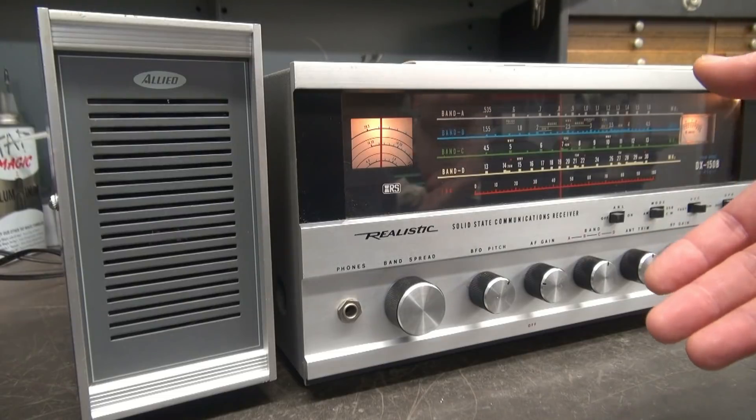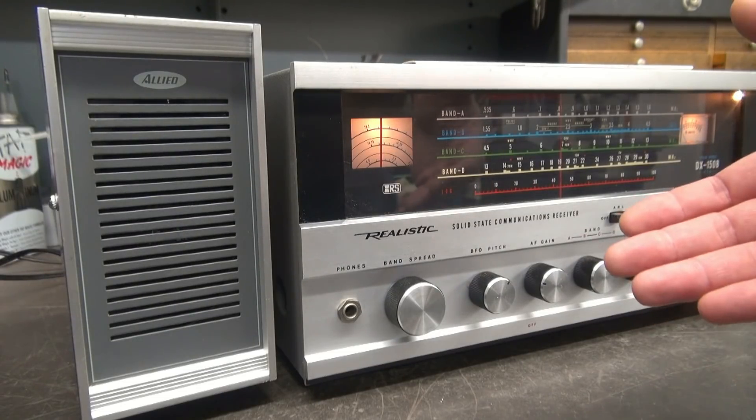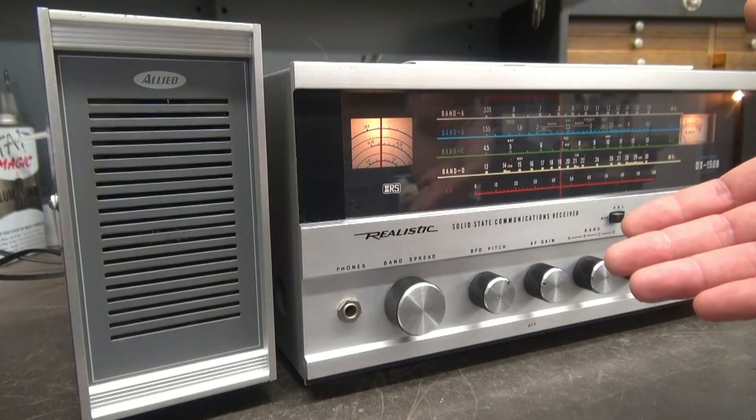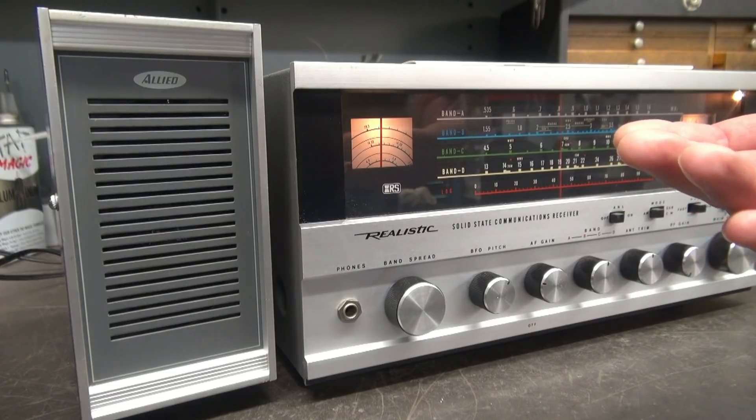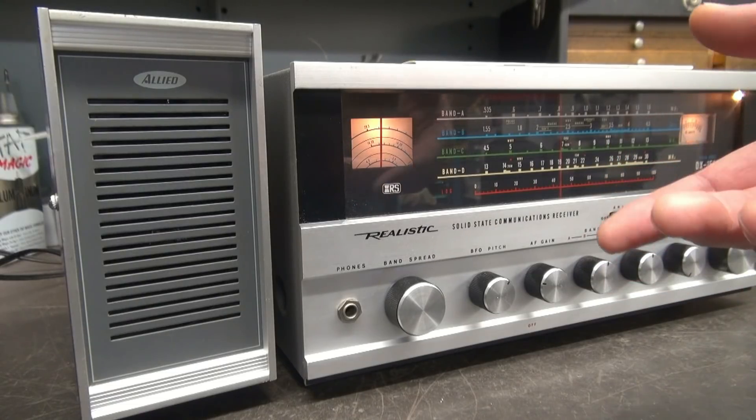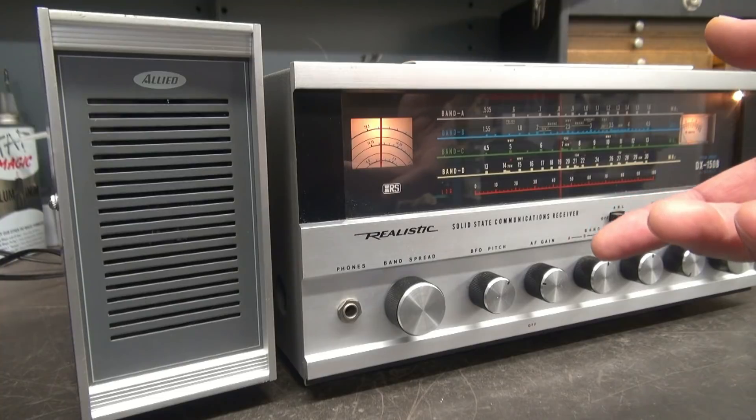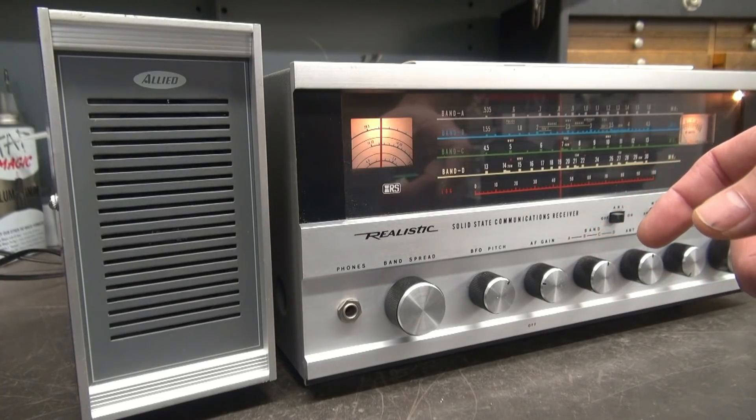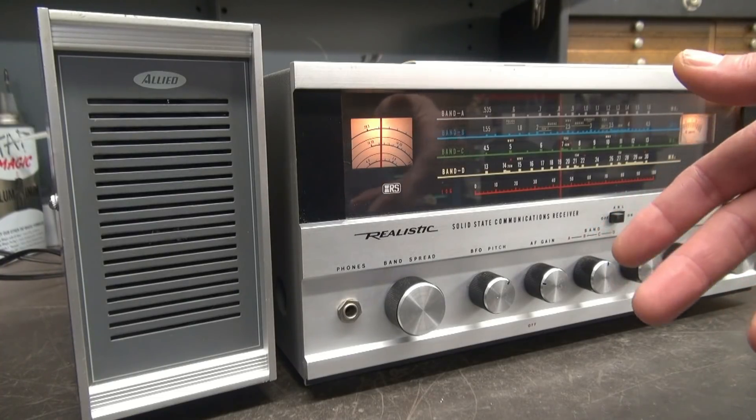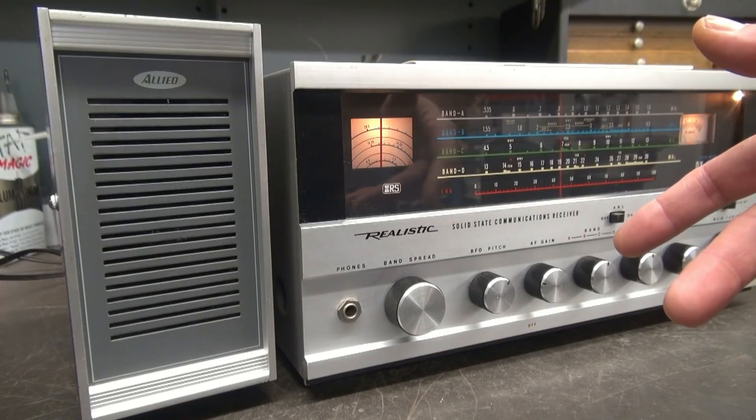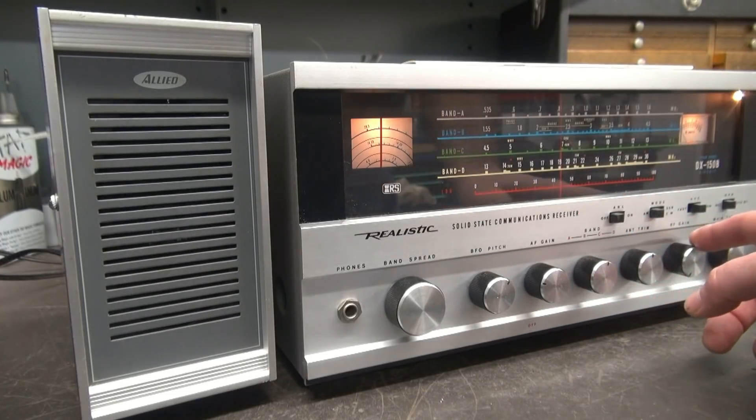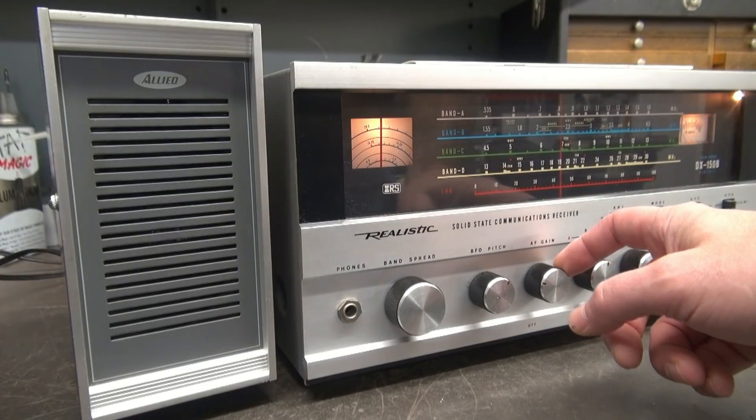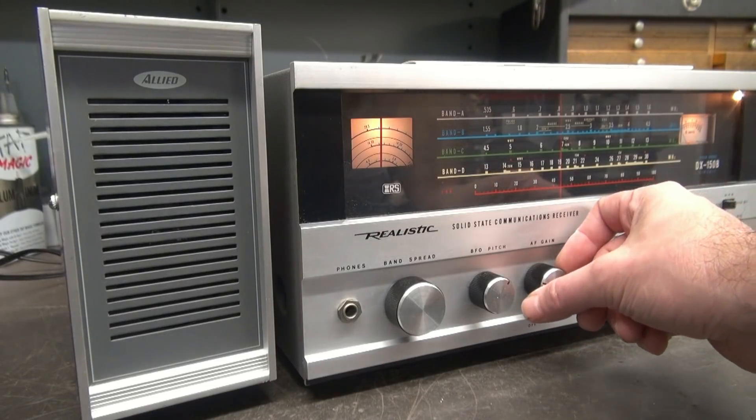One of the main complaints I've heard over the years of the 150 and 160 series receivers is the fact that they lack frequency stability and audio response. And this is due to an underrated power supply section in the radio. They have a very small power transformer and inadequate filtering for the DC power. So if you take a listen to this, I have the RF gain all the way back and we're going to turn the AF gain all the way up. And tell me what you hear.